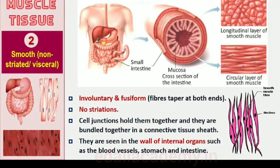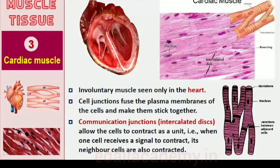Cardiac muscle tissue is a contractile tissue present only in the heart. Cell junctions fuse the plasma membranes of cardiac muscle cells and make them stick together. Communication junctions, called intercalated discs, at some fusion points allow the cells to contract as a unit — that is, when one cell receives a signal to contract, its neighbors are also stimulated to contract.